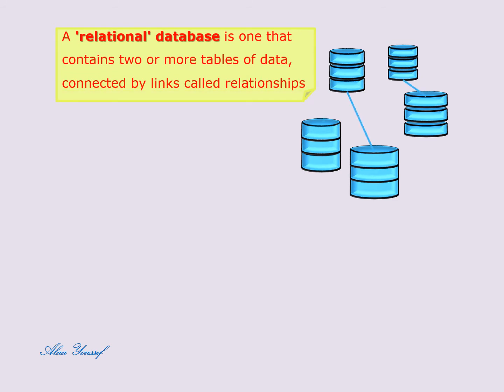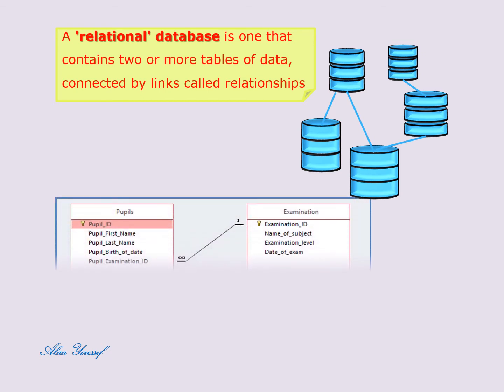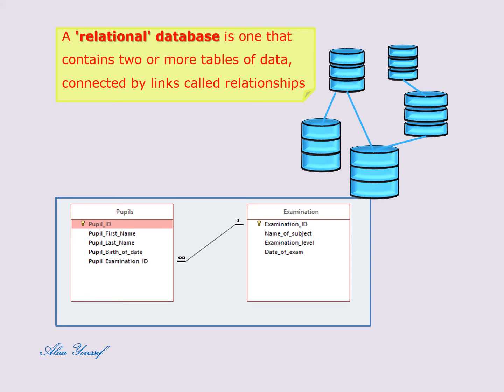The question provides two entities: pupils and examinations, which we will use to create two tables. We identify key fields for both tables to link them together to form a relationship, then import data into the two tables.